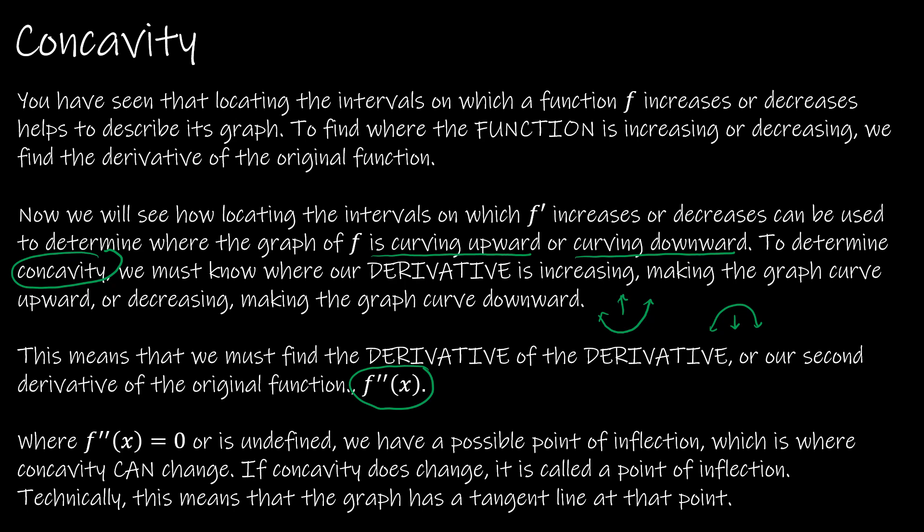We're going to find the second derivative for that. If you have a point — just like we looked at with critical numbers, where a critical number is the only place where a function can change from increasing to decreasing — now we want to find the points at which a function can change from concave up to concave down. Those are possible points of inflection, where f double prime of x equals zero. That's where it can change; if it does change there, it's called a point of inflection.